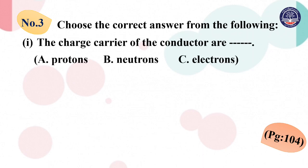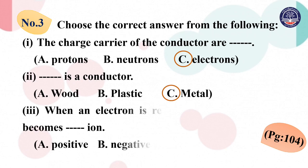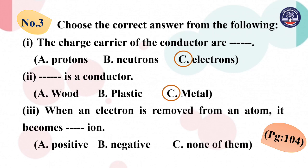The charge carriers of a conductor are: A) protons, B) neutrons, C) electrons — the answer is C, electrons. When an electron is removed from an atom, it becomes a positive ion — the answer is A, positive.